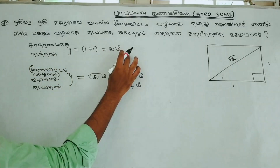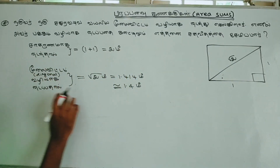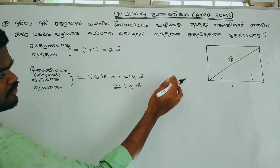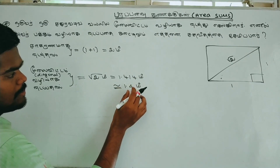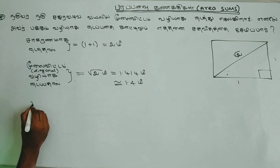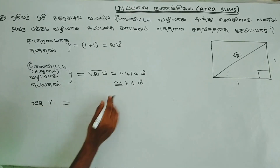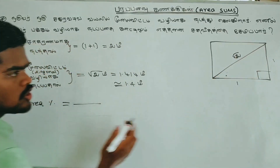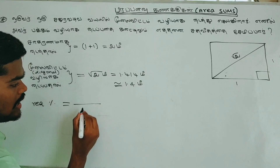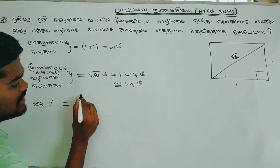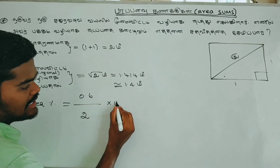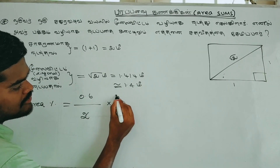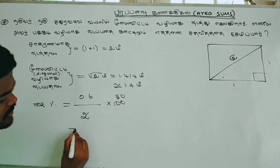So if you walk the diagonal, you go √2 meters compared to 2 meters along the sides. The difference is 2 − 1.4 = 0.6 meters saved. The required percentage saved equals (0.6/2) × 100 = 30%. So walking diagonally saves 30% of the distance.